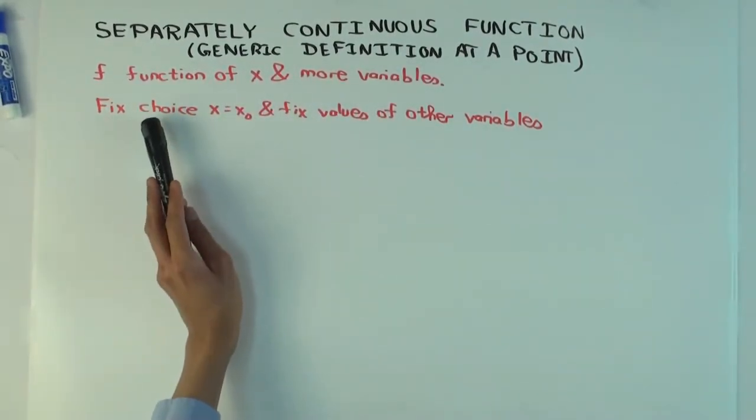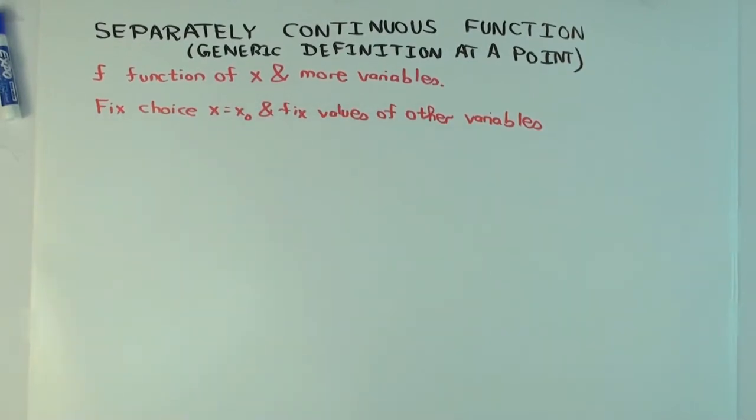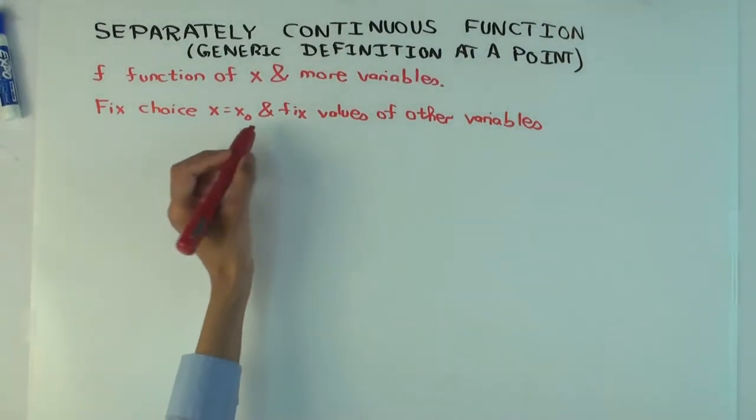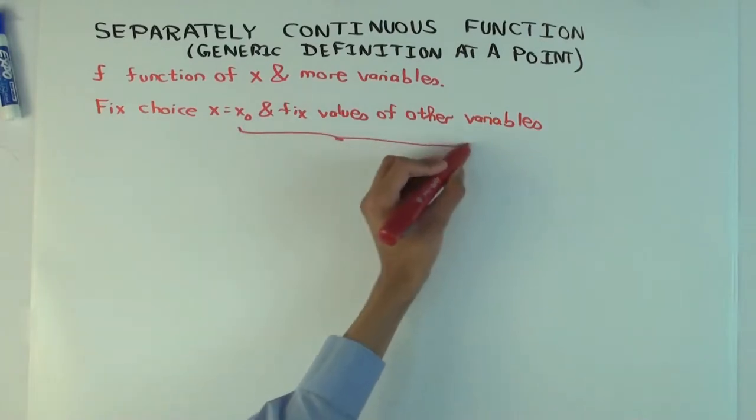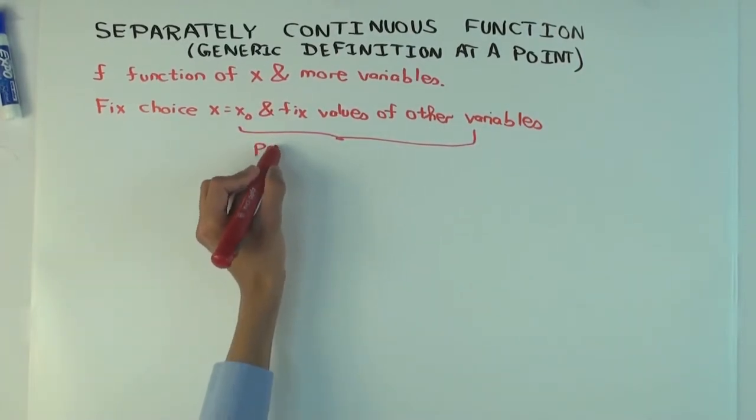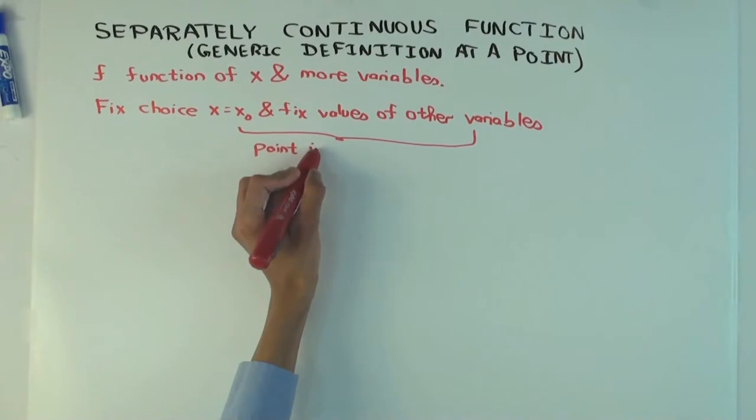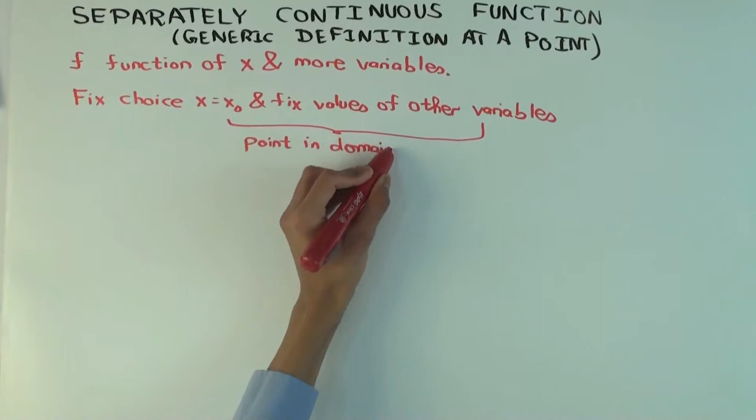And now, I've fixed a point in the domain of f. Let me just write that down clearly. So basically, this is a point in the domain of f, basically involves specifying the x value to be some number x naught, and also specifying the values of the other variables.